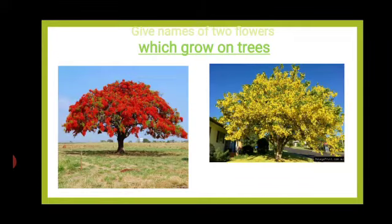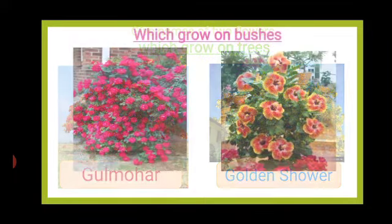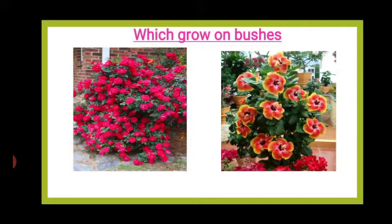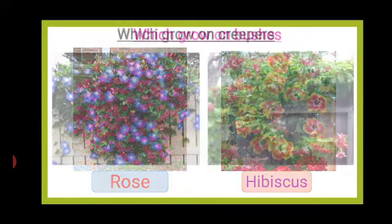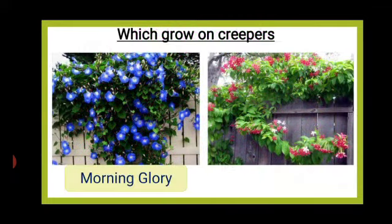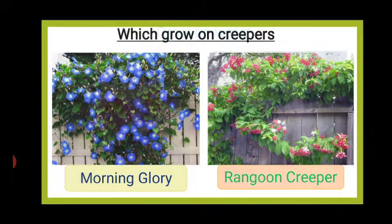Give names of two flowers which grow on trees: Gulmohan, Golden Shower Tree. Give names of two flowers which grow on bushes: Rose, Hibiscus. Give names of two flowers which grow on creepers: Morning Glory, Rangun Creeper.